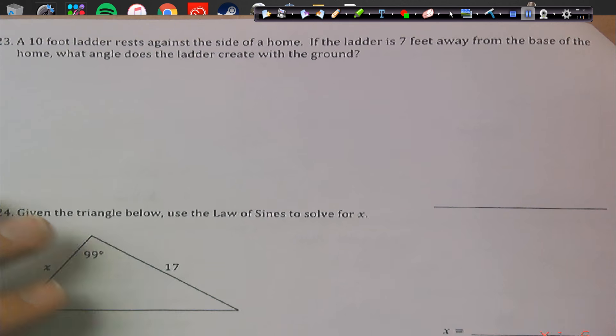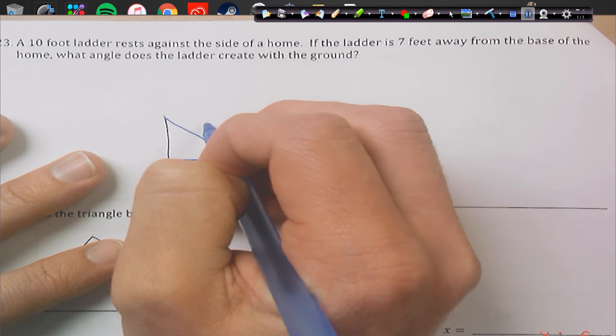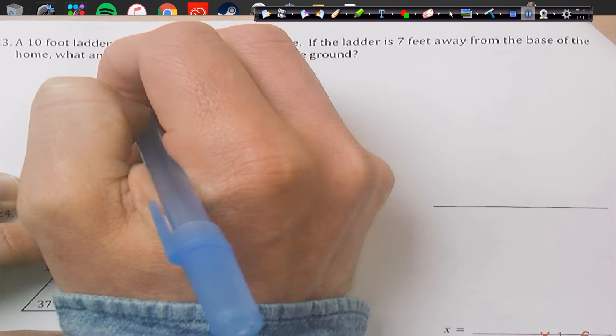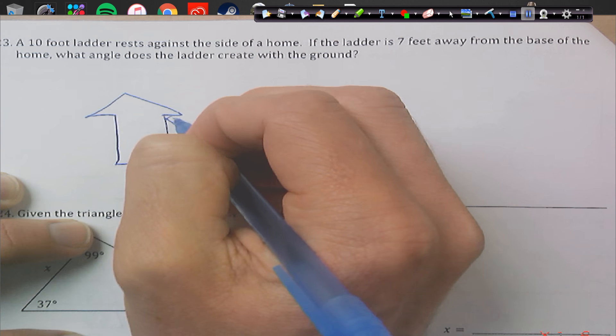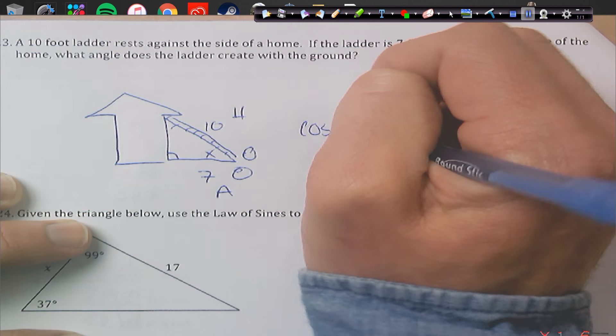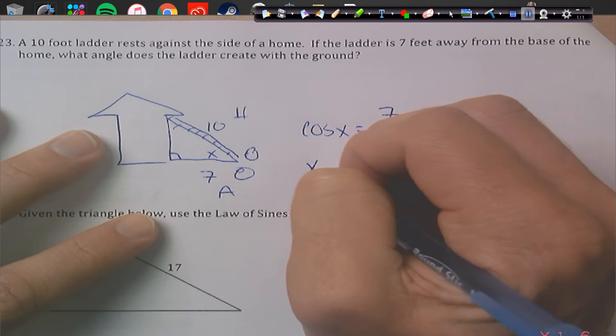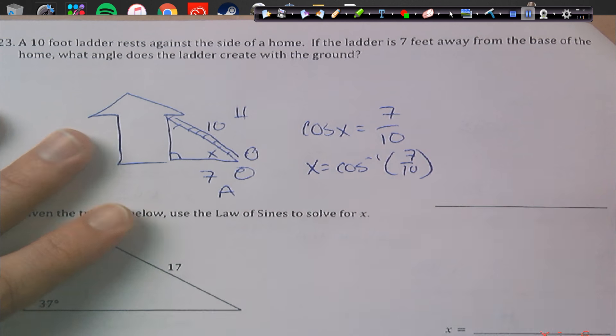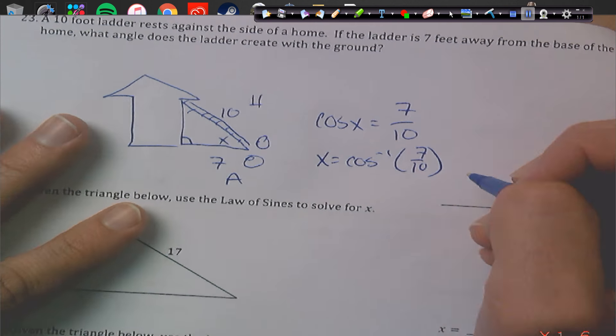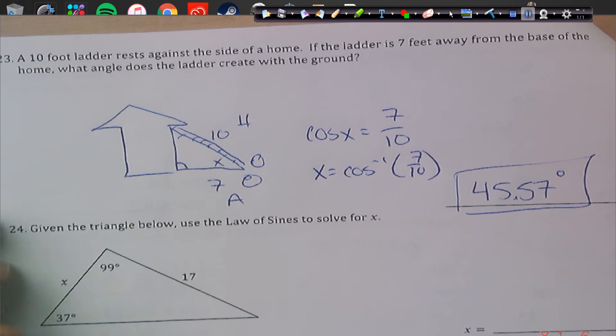And I think we have two more problems that finish part 1. All right. 10-foot ladder rests against the side of the home. Ladder is 7 feet away from the base. What angle does the ladder create with the ground? All right. So, this is a slightly different problem than what we had before. 7 to 10-foot ladder. It's 7 feet away. I want to know what angle does it create with the ground? So, here's the house. Here's the ground, and here is our ladder, right? So, what's that? So, my eyes are right here. I have the hypotenuse, and I have the adjacent. So, I'm going to use the cosine of x equals adjacent over hypotenuse. Using SOHCAHTOA is the inverse cosine of 7 over 10. And we are going to get 45.57. And we're going to go degrees, because we're looking at an angle there.